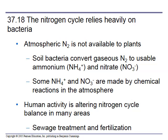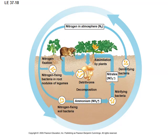The nitrogen cycle relies heavily on bacteria, because plants cannot take nitrogen straight out of the atmosphere. Soil bacteria convert nitrogen to a usable form — either ammonia or nitrate. Some ammonia and nitrate are made available by chemical reactions in the atmosphere, but it's mostly through bacteria. Human activity is altering the nitrogen cycle — sewage treatment and fertilization alter the nitrogen cycle because those are nitrogen waste products. Nitrogen-fixing bacteria make nitrogen available to plants; when animals excrete, nitrogen waste products go back into the cycle.